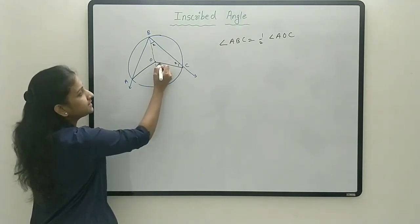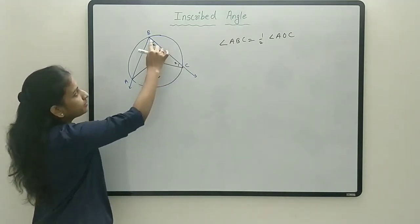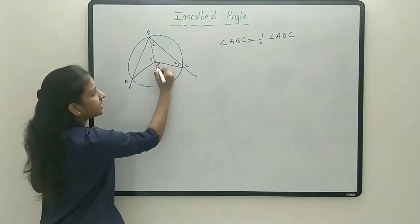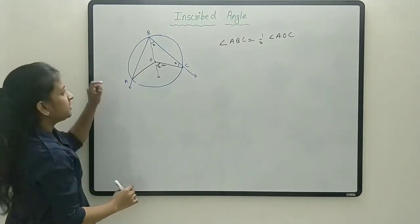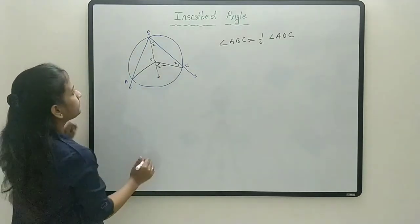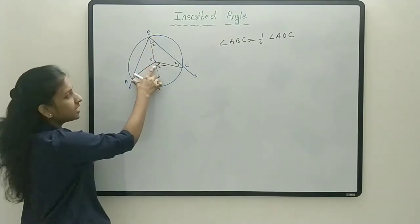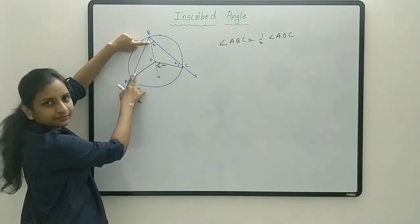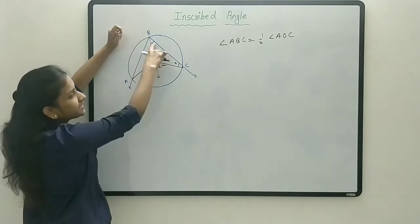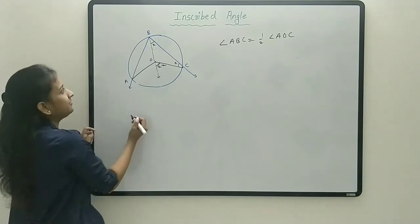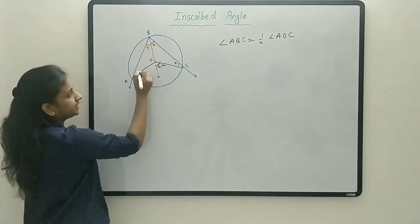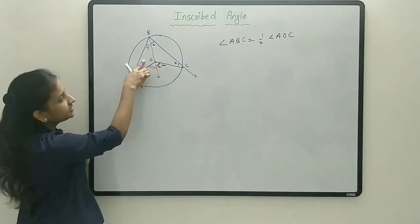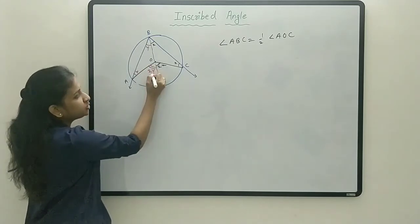In triangle BOC, BO is a radius and OC is a radius, so they are equal — this is an isosceles triangle. Angles opposite to equal sides are equal, so if this angle is X, then this angle is also X. This angle at O is the exterior angle of triangle BOC, so it equals the sum of the two remaining interior angles, giving 2X.